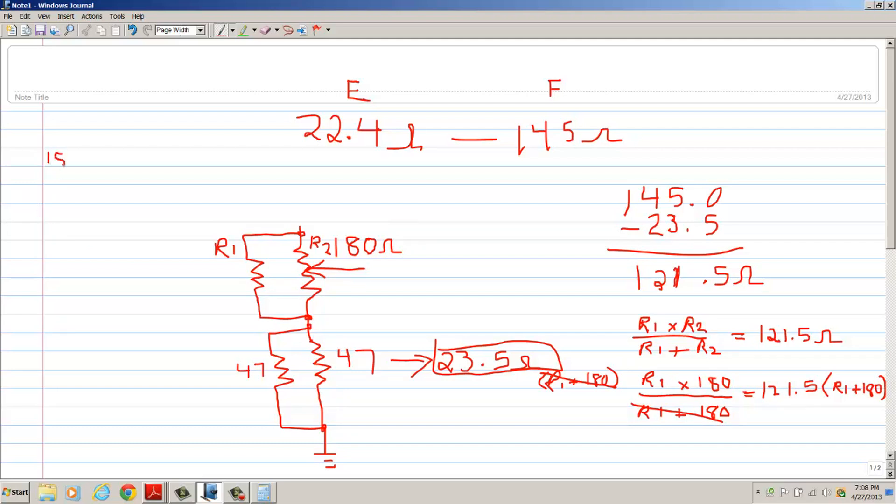That leaves us with R1 times 180. So I'm going to start that over here, so that will be 180 R1 is equal to 121.5 R1 plus... now we're going to take 121.5 times 180, and that should be 21,870.